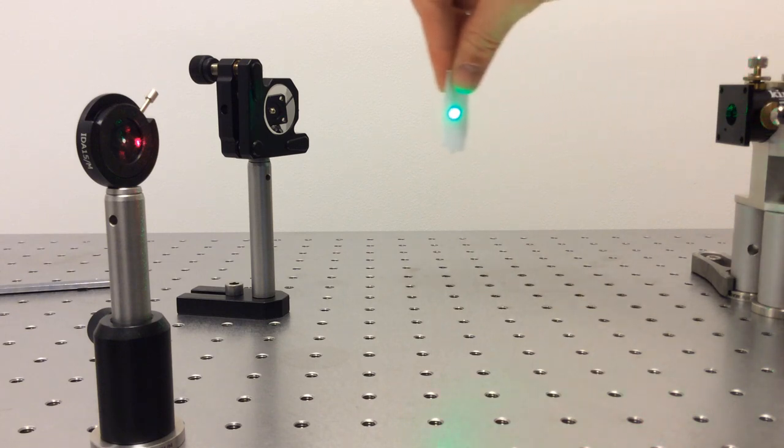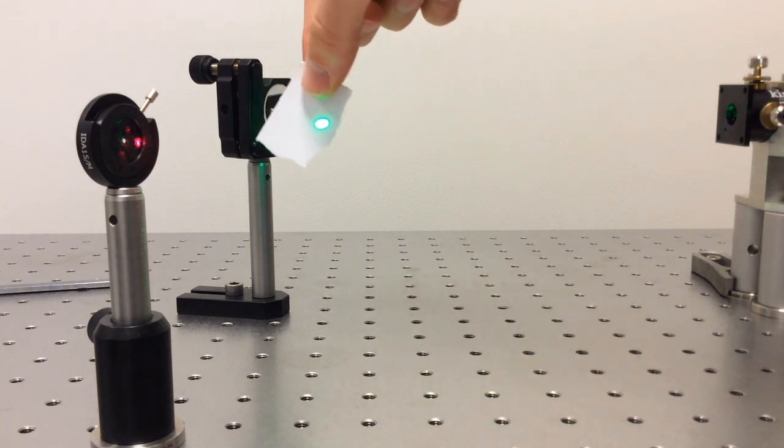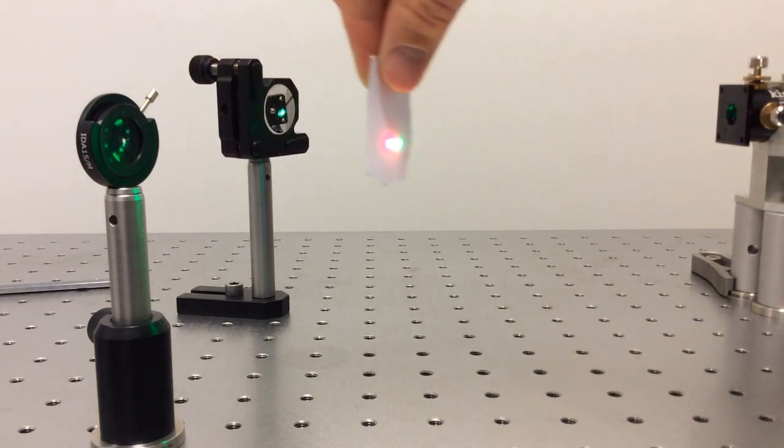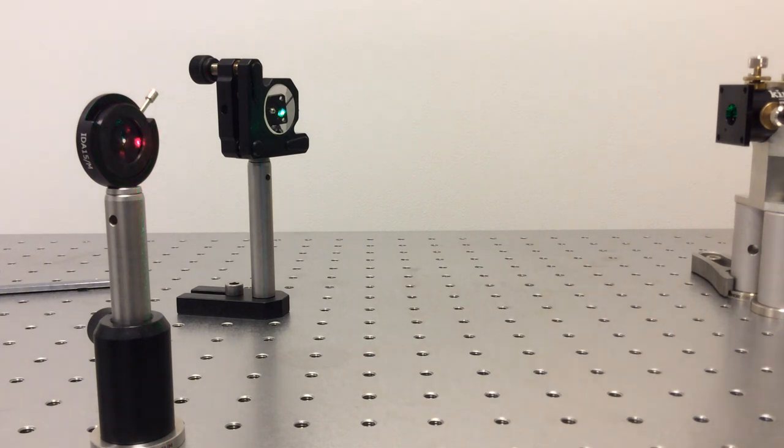Here I have a green laser that bounces off a mirror and a second, red laser. I want them to go along the same path, so I will have to combine them at their crossover point. To do that, I use a dichroic mirror.